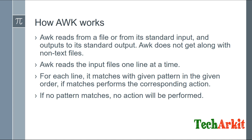AWK reads from a file or from its standard input — for example, given some standard input on the console itself — then it reads, formats that data, and outputs to its standard output. AWK does not work with non-text files. AWK reads the input files one line at a time. If you have lakhs of lines in a single file, it goes through them line by line.